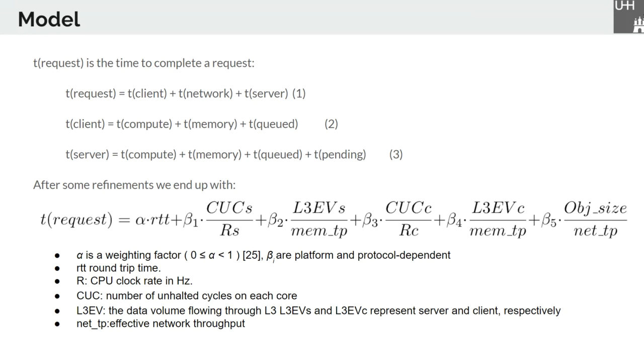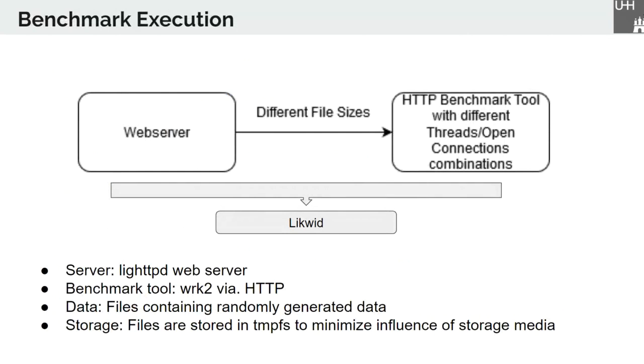Where alpha is a weighting factor, the beta are platform and protocol-dependent factors, RTT is the round-trip time, R is the CPU clock rate in Hz, CUCs is the number of unhalted cycles on each core, L3EVs and L3EVc are data volumes flowing through the L3 cache for server and client respectively, CUCc is client CPU cycles, and net_tp is effective network throughput.